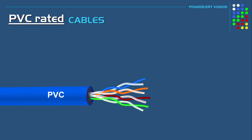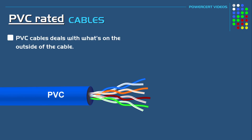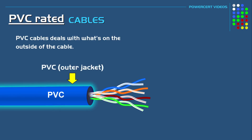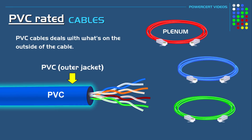Hello everyone. In this video we're going to talk about the difference between PVC-rated network cables. The difference between these types of cables is not what's on the inside of the cable, and it's not whether it's a Cat5, Cat6, or Cat7 — that doesn't matter. The difference is what's on the outside of the cable, specifically the outer jacket that protects the cable. These PVC ratings are either plenum, riser, or just a general purpose cable.